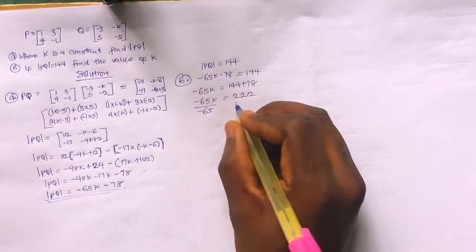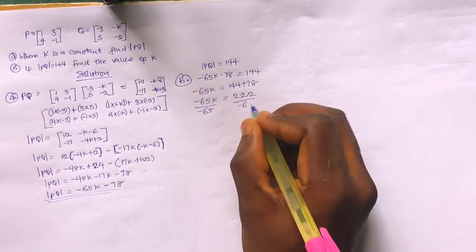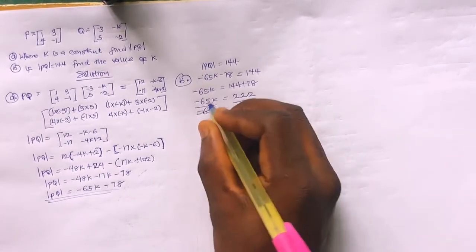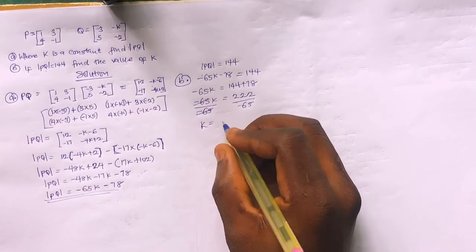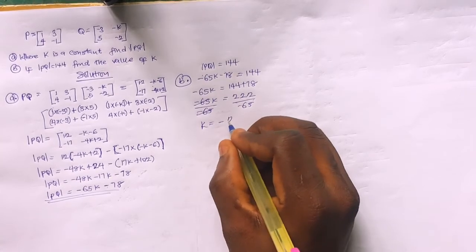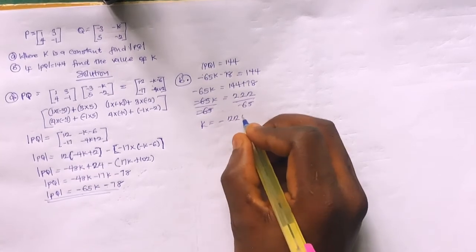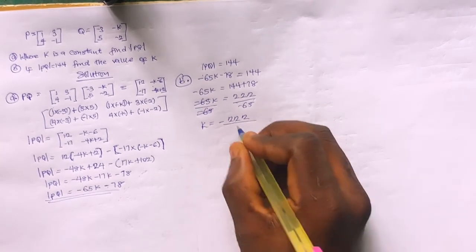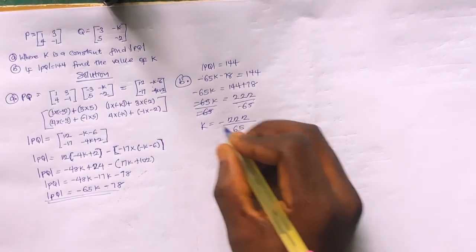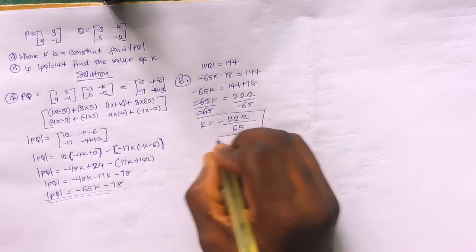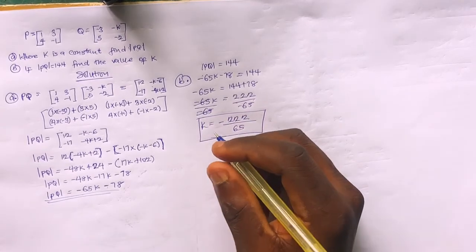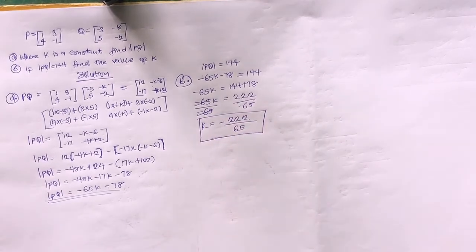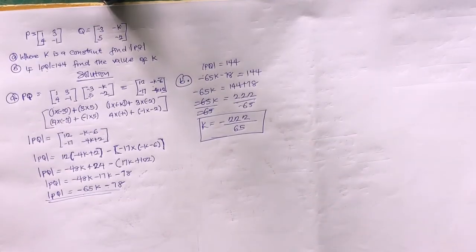Dividing both sides by -65, we get k equals -222 over 65. This is the final answer for the value of k.